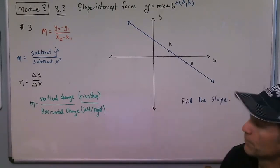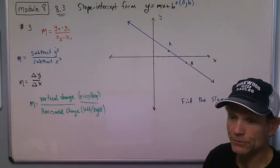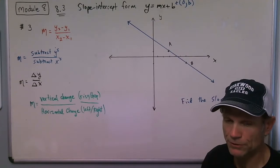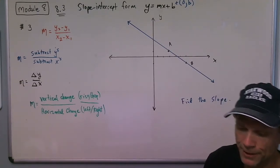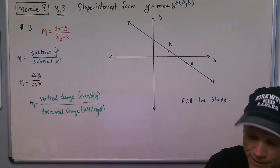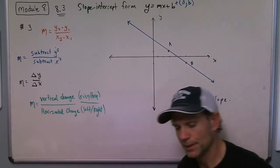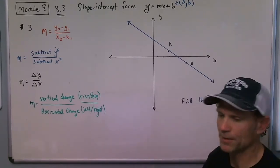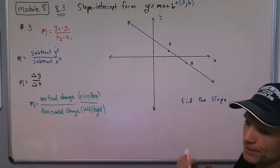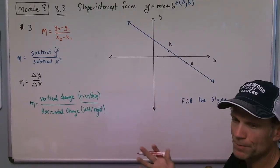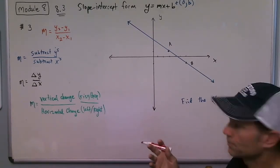So what we could do when we are given a picture like this is we could just count what the slope is from the picture. I'm going to show you the counting method if we have the picture, and then we'll look at the formula method and see if they match up. With the counting method, you can pick either A or B as your starting point. I'm going to show you both of them.